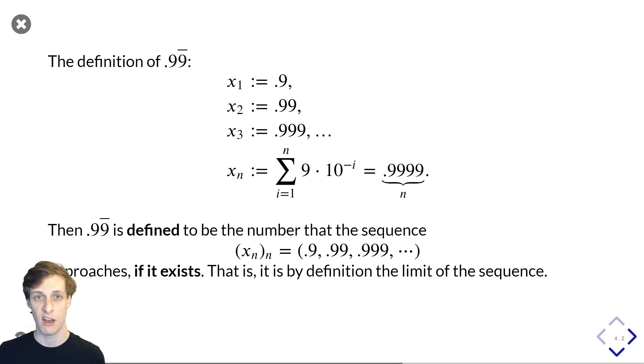The definition of 0.99 repeating is just the number that this sequence approaches, if there is such a number. In mathematical terms, we say that it is the limit of the sequence, but it's okay if you're not familiar with limits. Just think it's the number that this sequence approaches.